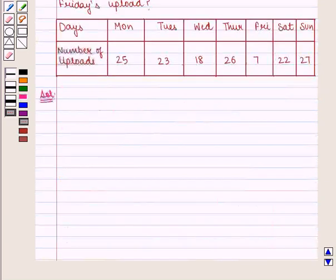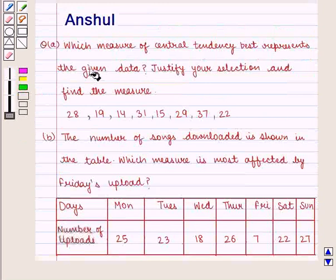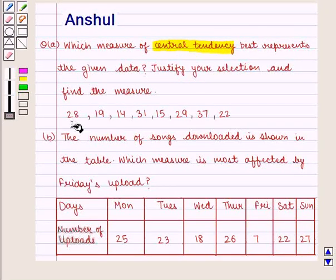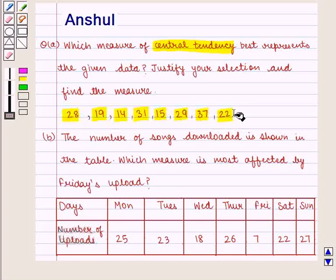Let us move on to the solution. In this question, we need to find which measure of central tendency best represents the given data. The data is given as: 28, 19, 14, 31, 15, 29, 37, and 22.